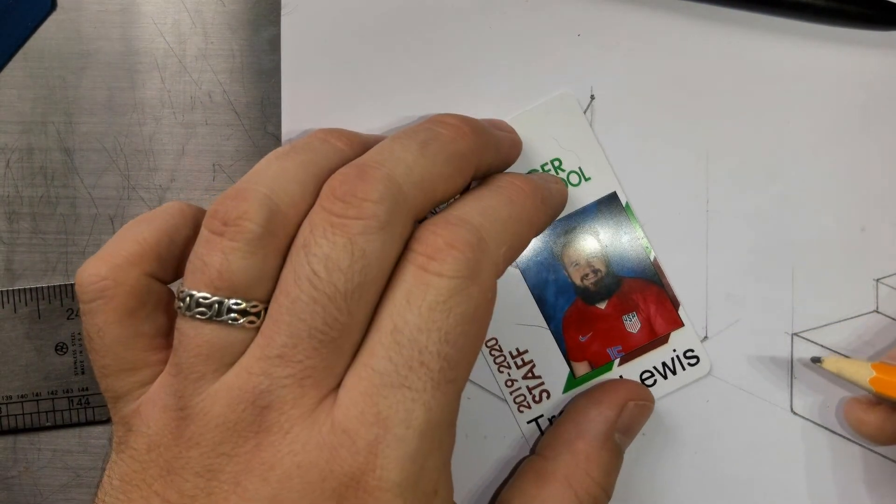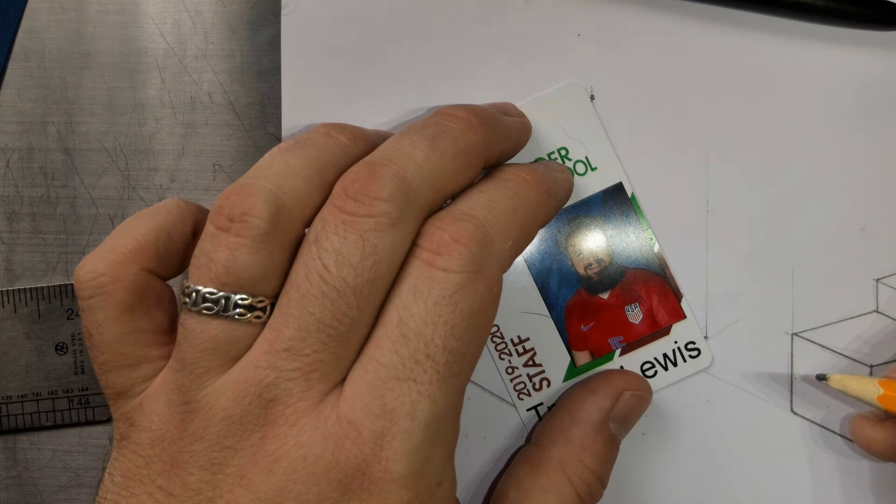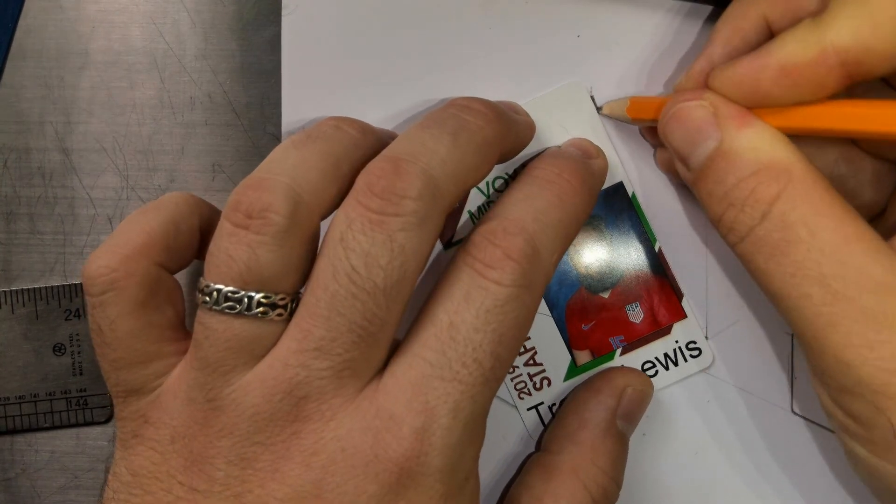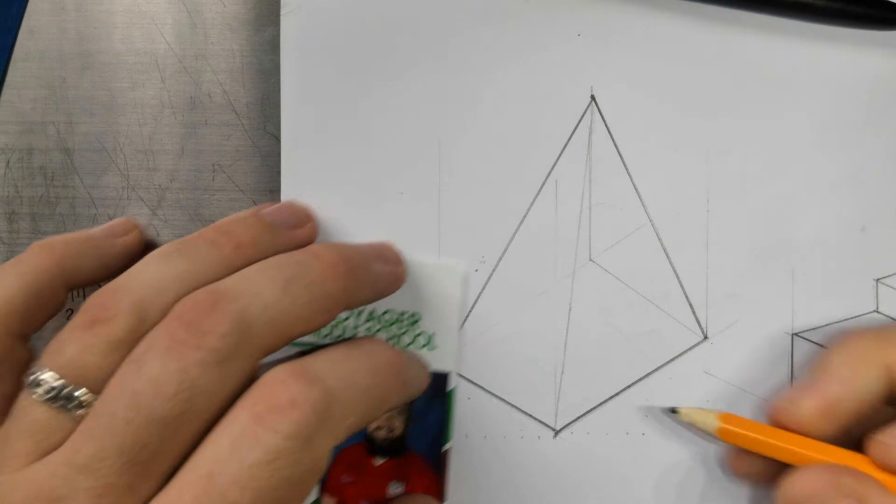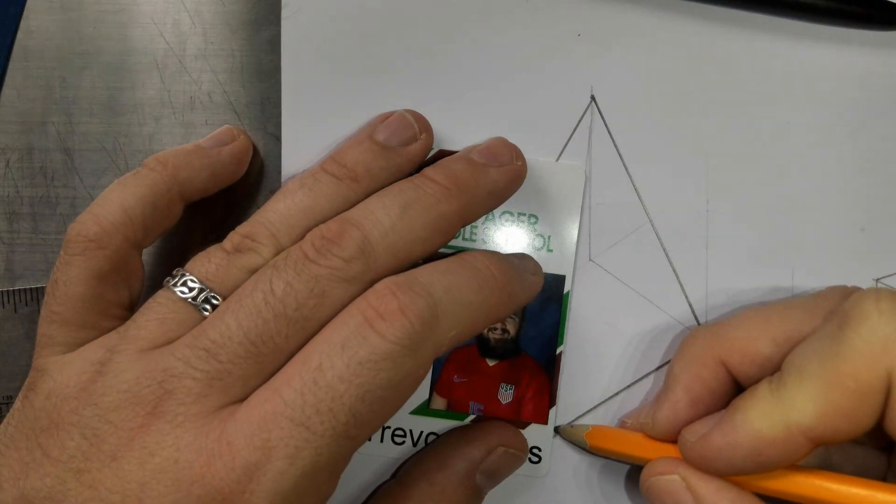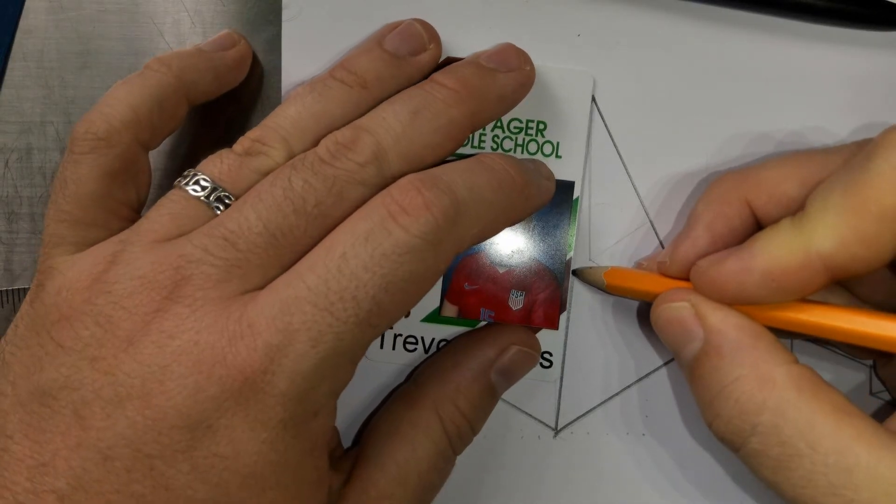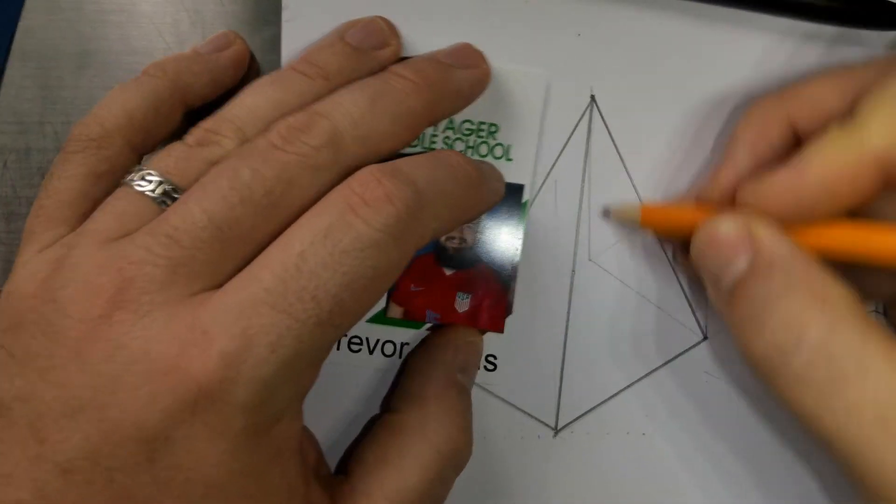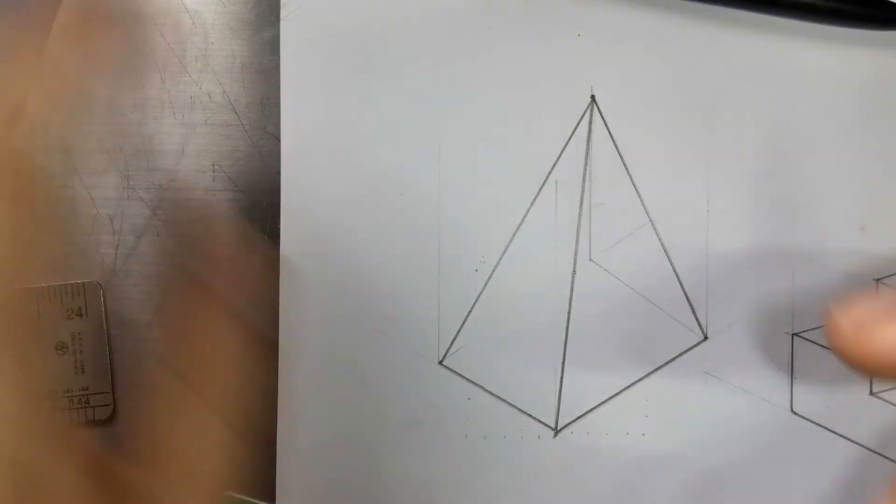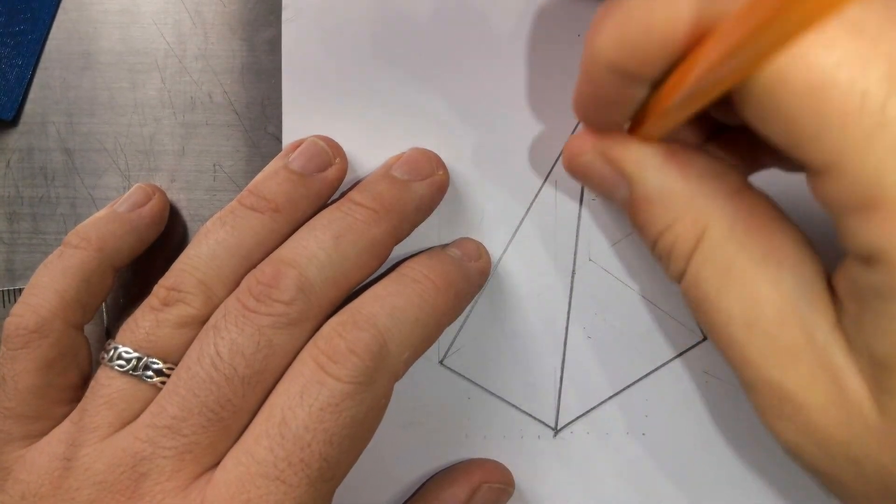This one is right on the edge of my straight edge but I think I can do it. So let's darken this line up. There we are. I'll just hit this back corner here a little bit more.